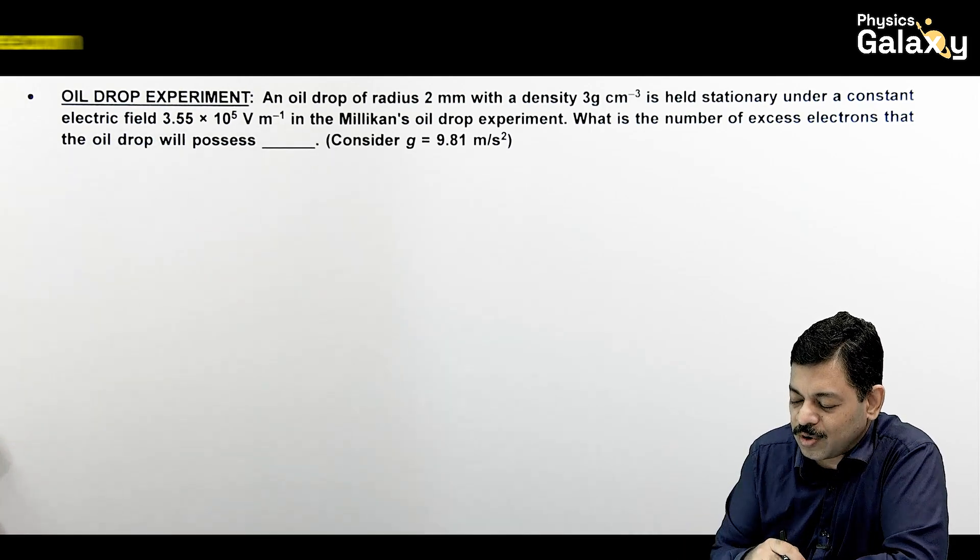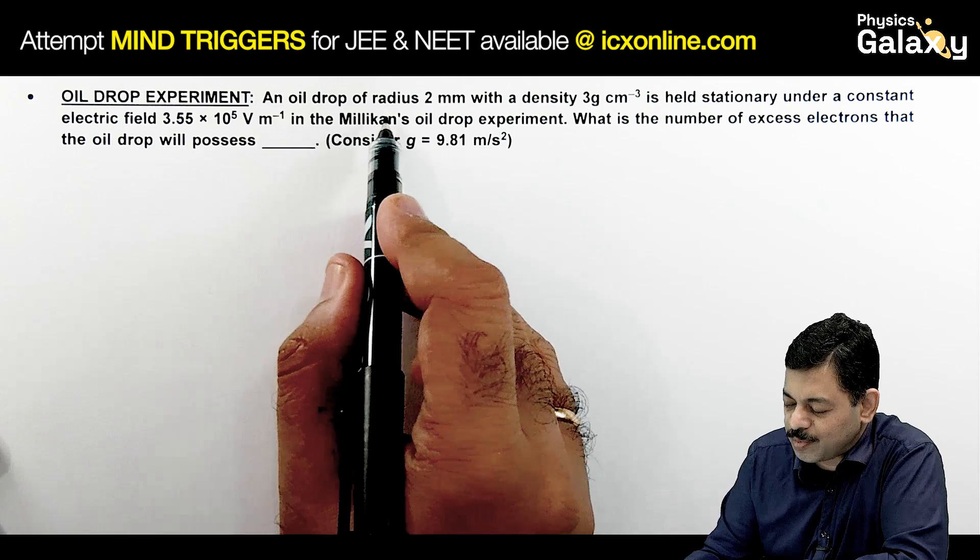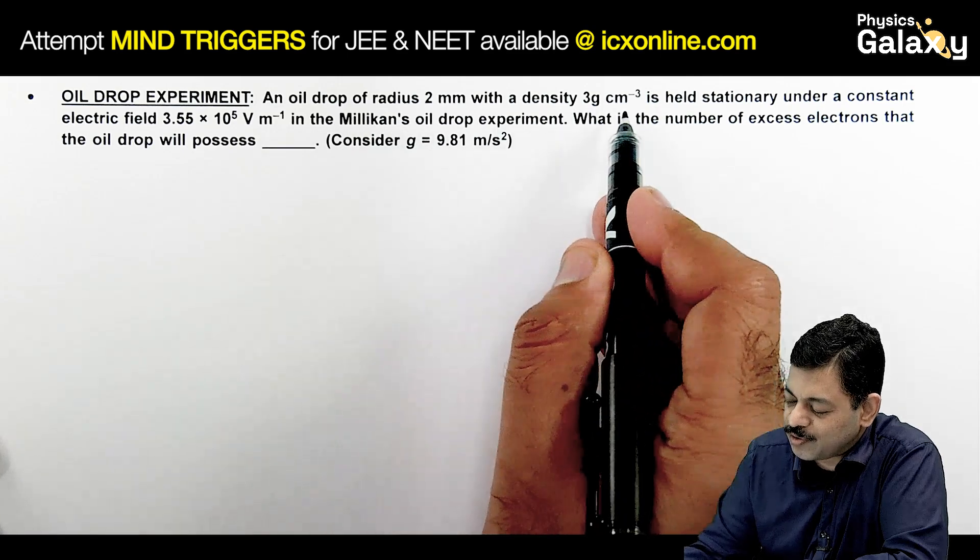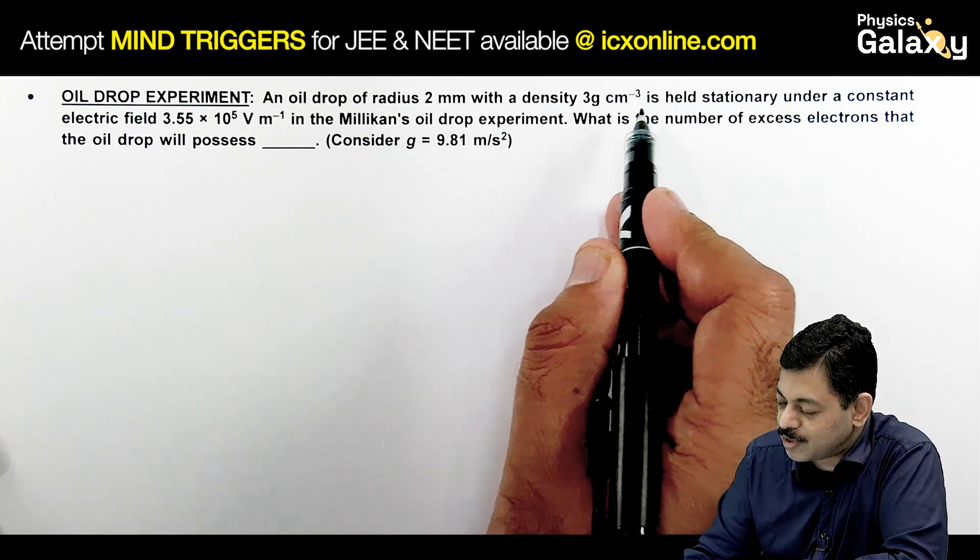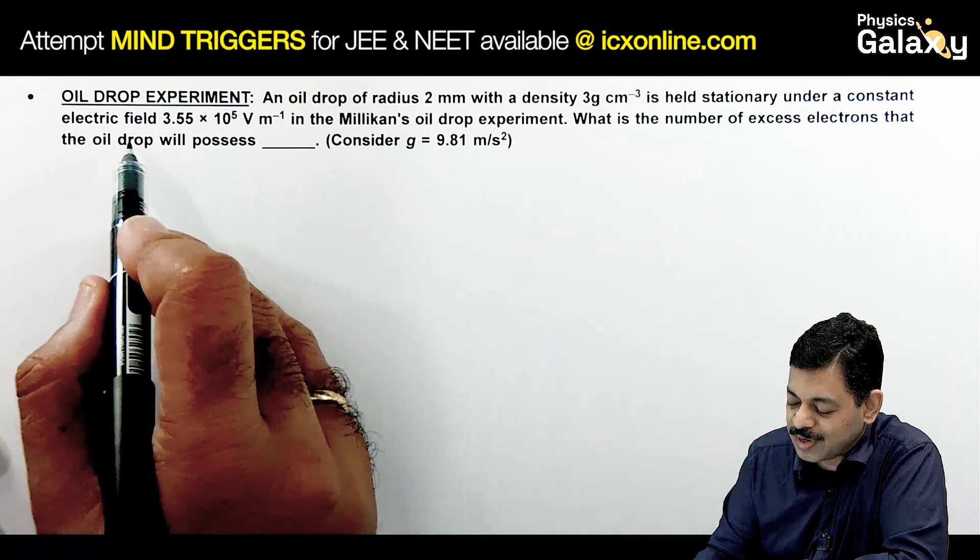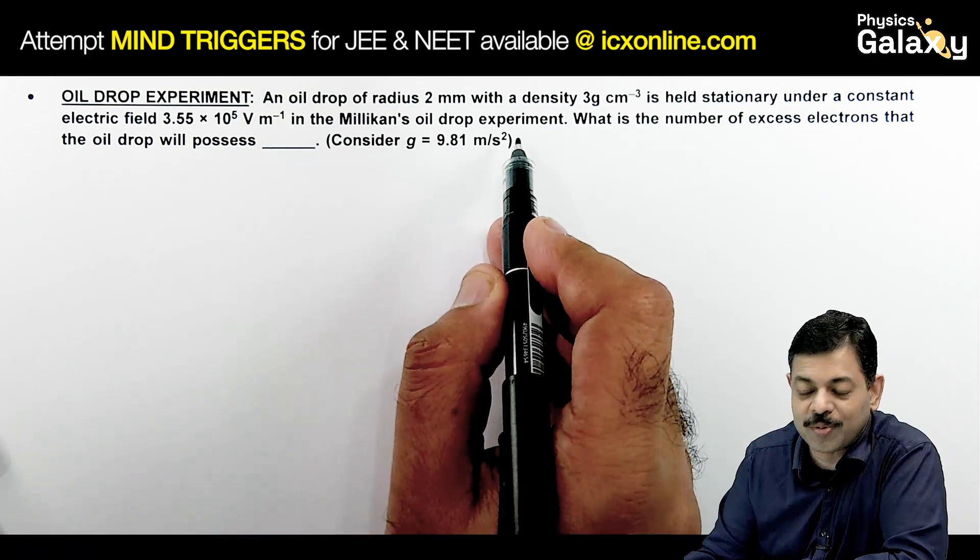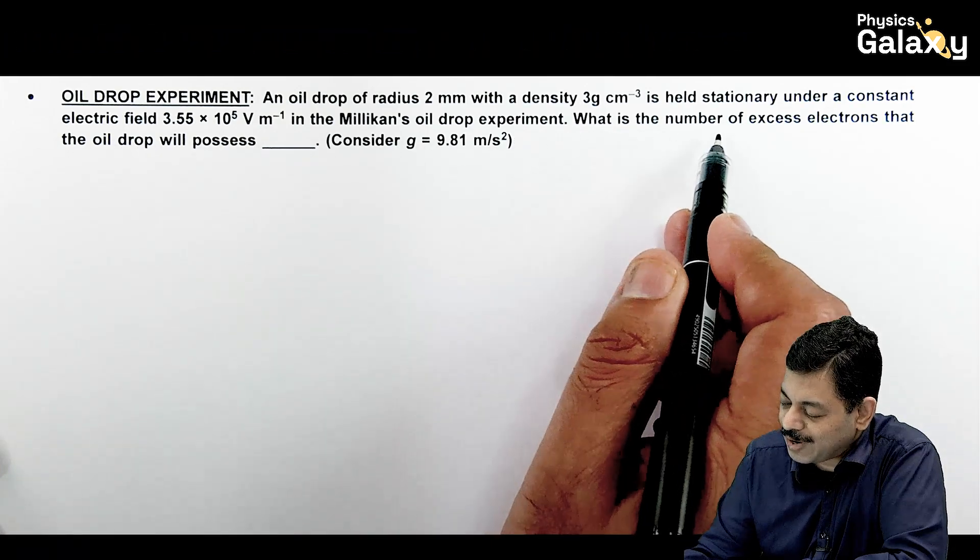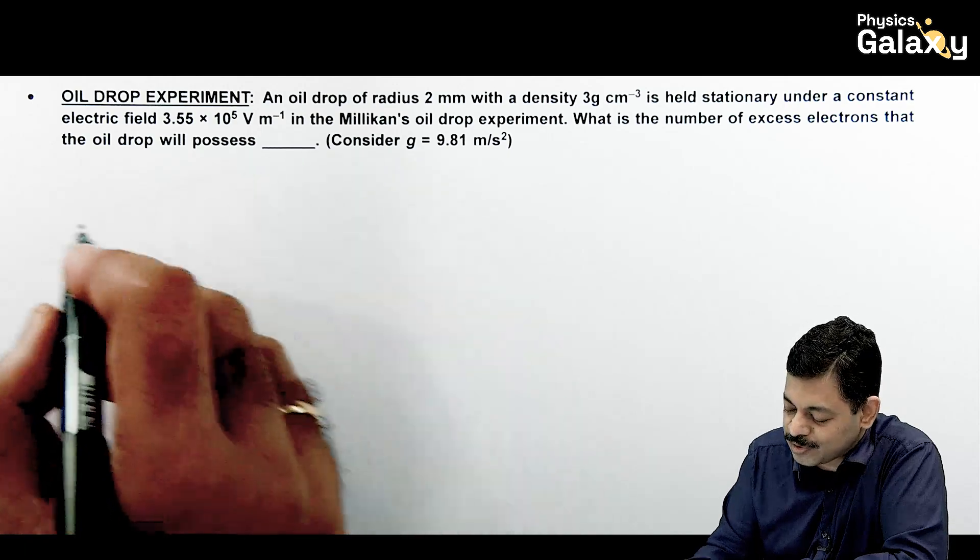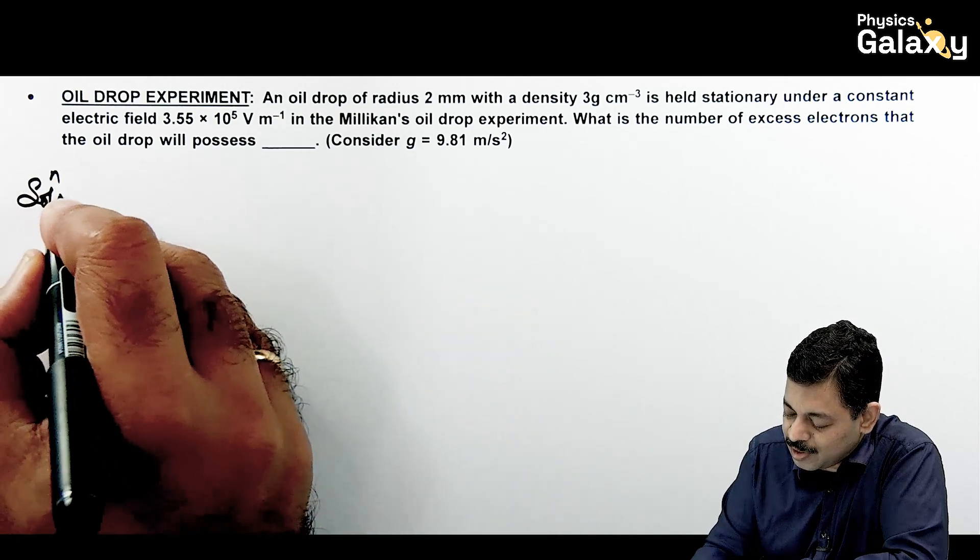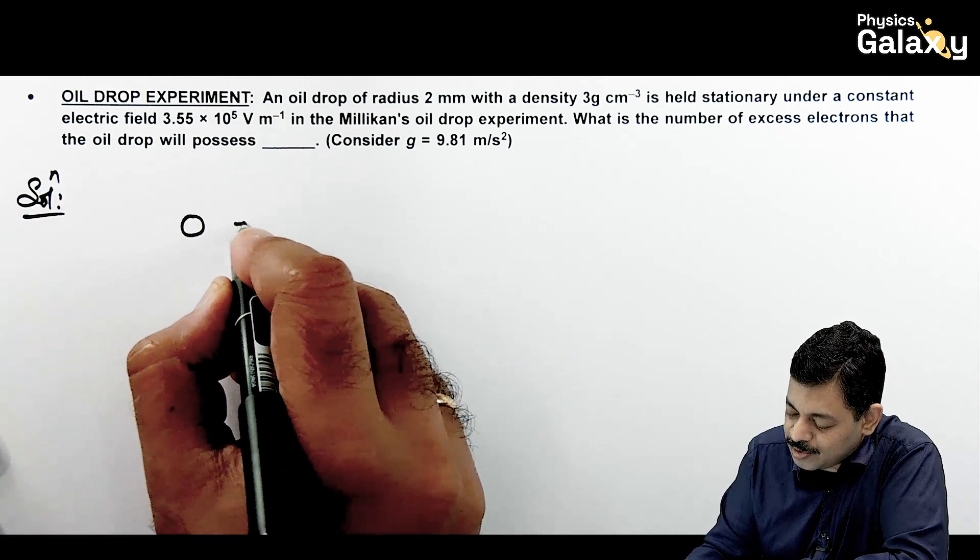We have a look over here, this is based on an oil drop experiment. It says an oil drop of radius 2 mm with a density of 3 gram per centimeter cube is held stationary under a constant electric field in the Millikan's oil drop experiment. It is asking what is the number of excess electrons that the oil drop will possess.